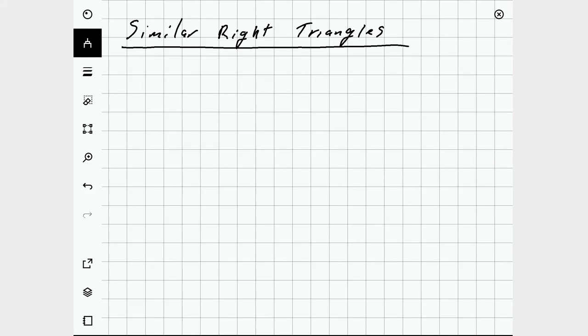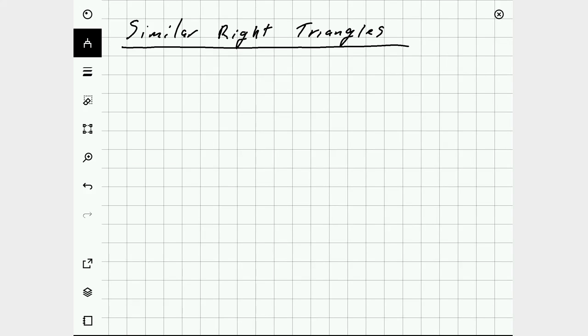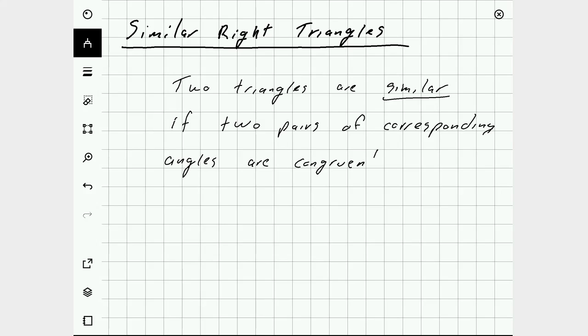Similar right triangles. Recall from the basic properties of geometry that two triangles are similar if two pairs of corresponding angles are congruent.